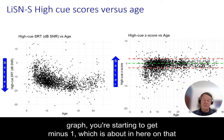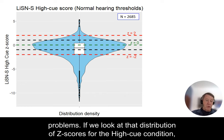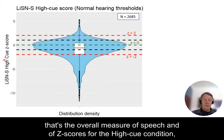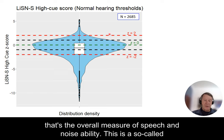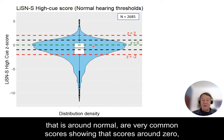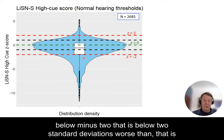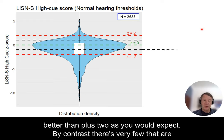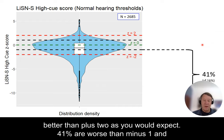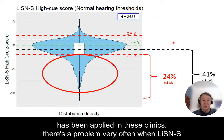Scores below minus two we generally regard as a problem — well outside the normal range — and even scores below minus one, you're starting to get suspicious the person may be having problems. Looking at that distribution of z-scores for the high-Q condition — the overall measure of speech-and-noise ability — this violin plot shows that scores around zero are very common, but look at all the scores below minus two. In fact 41% are worse than minus one and 24% are worse than minus two.